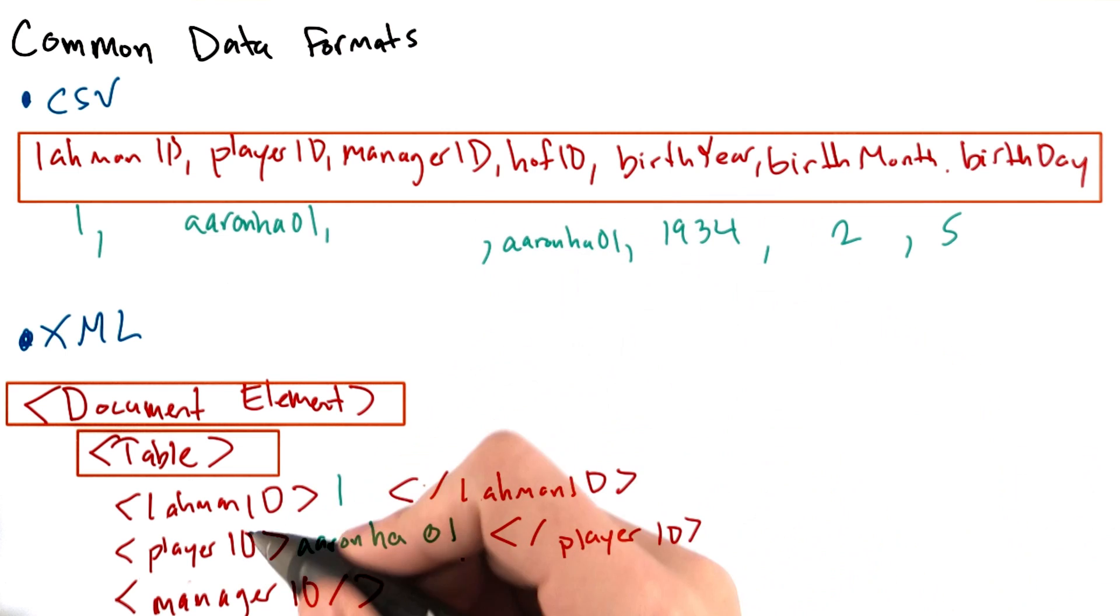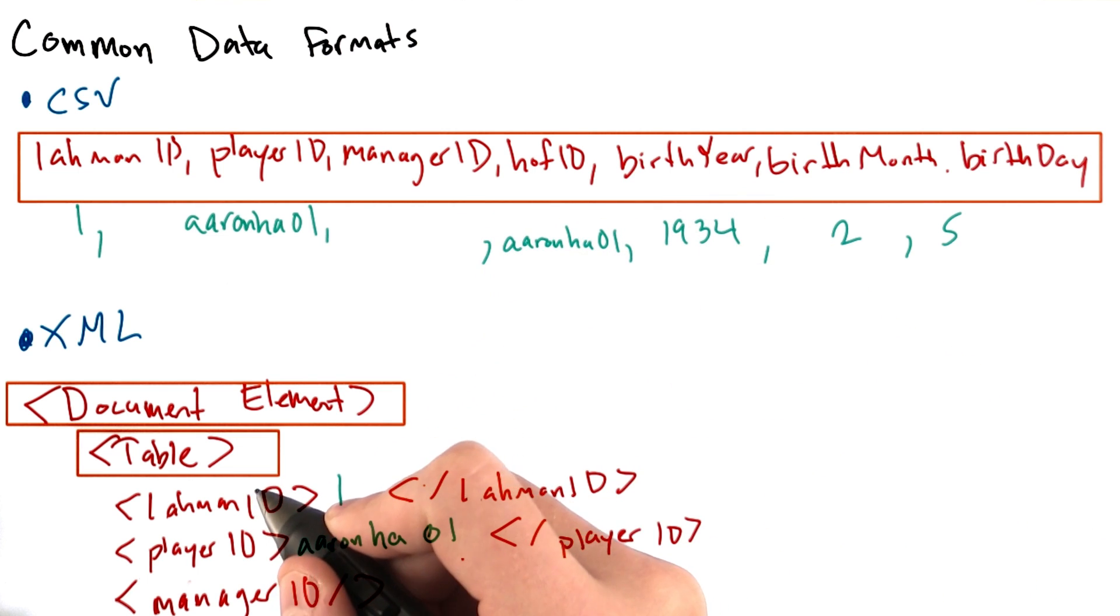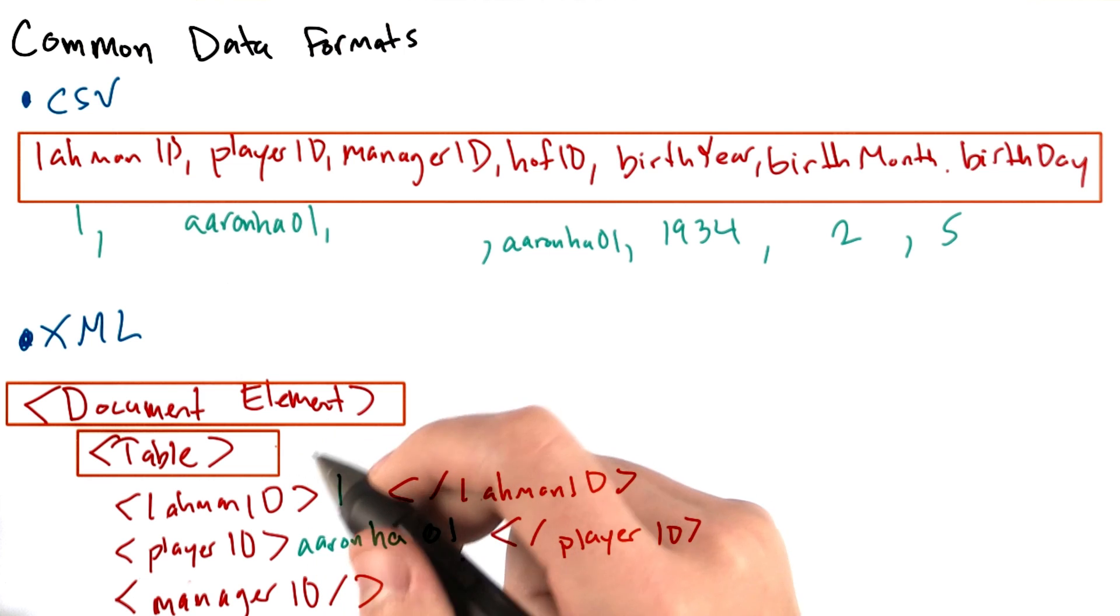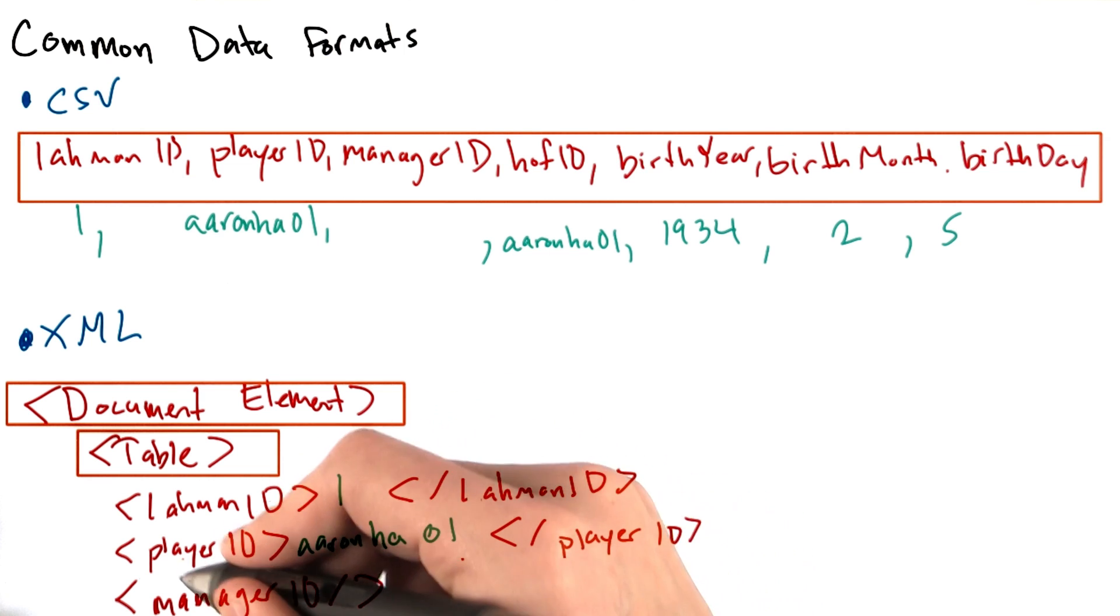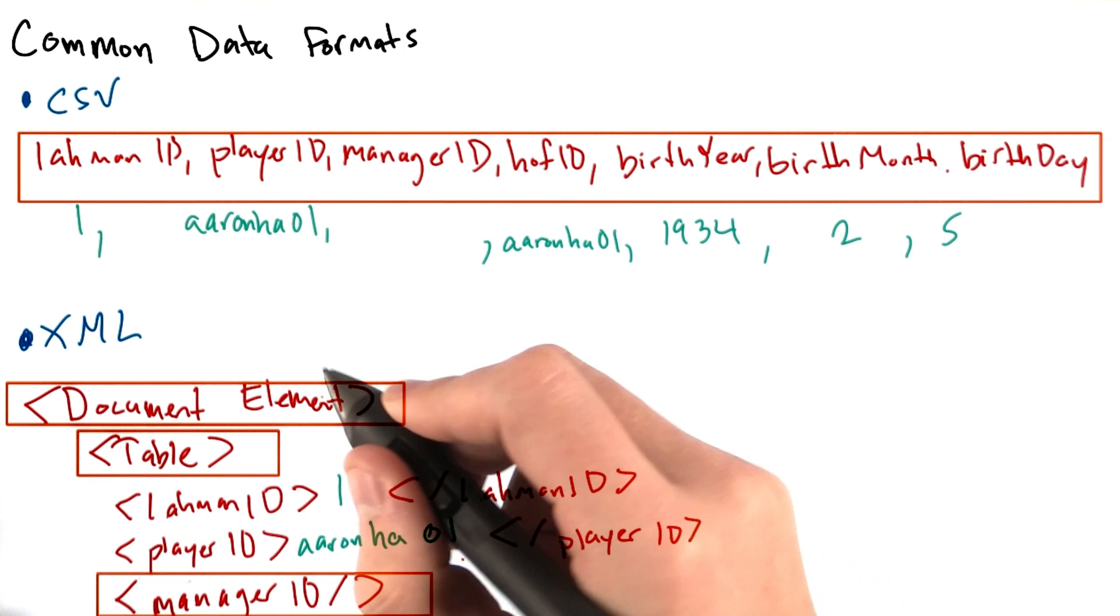Note that when we're missing a value in XML, things are treated a bit differently. For example, since Hank Aaron was not a manager, we just open the manager ID field, and then put a slash at the end.